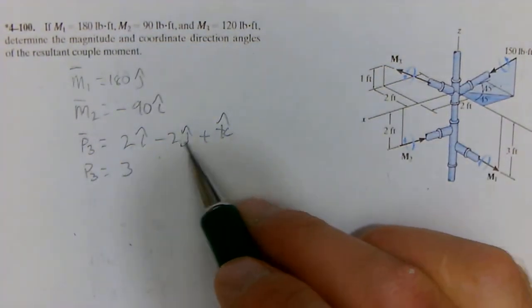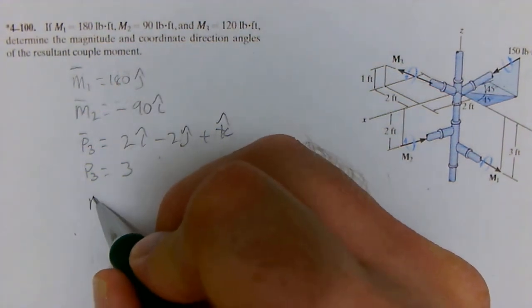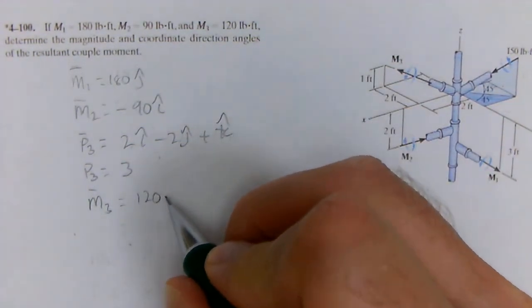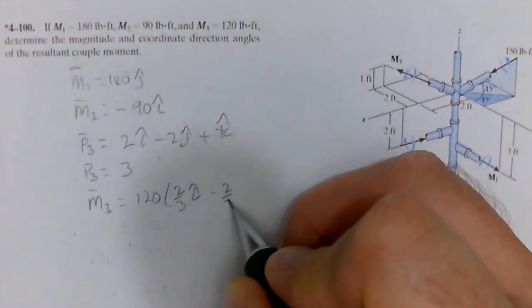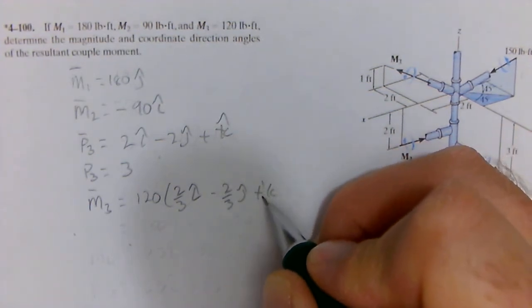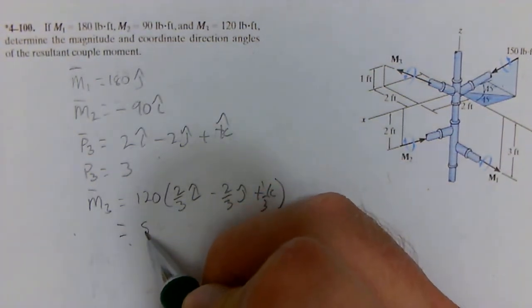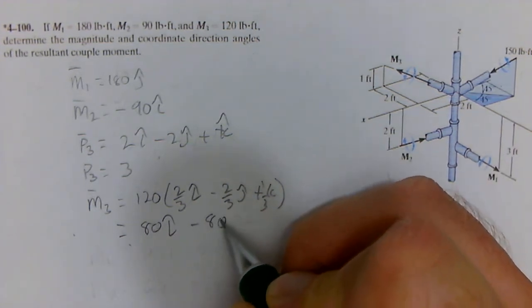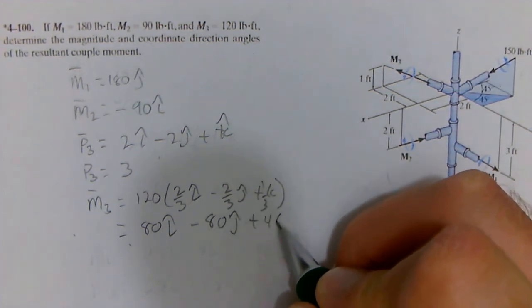The magnitude of the position vector is going to be 3, because 4 plus 4 plus 1 is 9, and the square root of 9 is 3. So moment 3 is the magnitude 120 times 2/3 i minus 2/3 j plus 1/3 k. Multiplying out, we get 80 in the i minus 80 in the j plus 40 in the k.